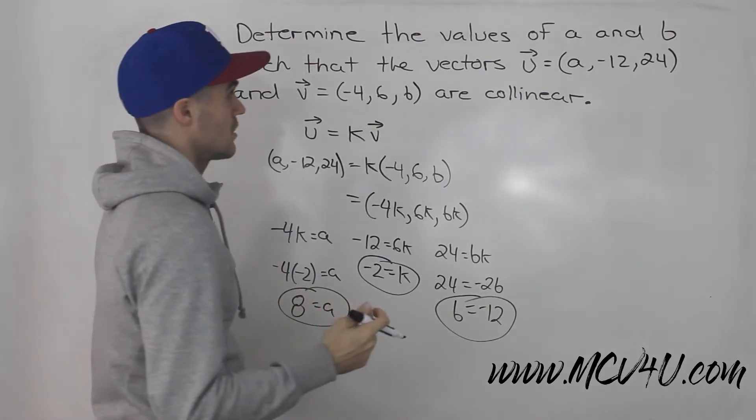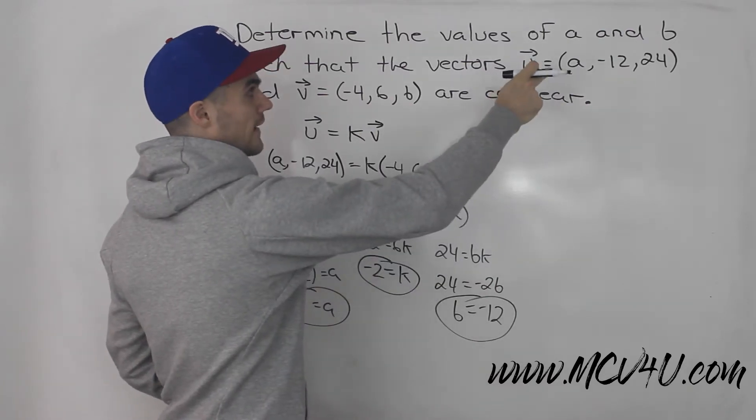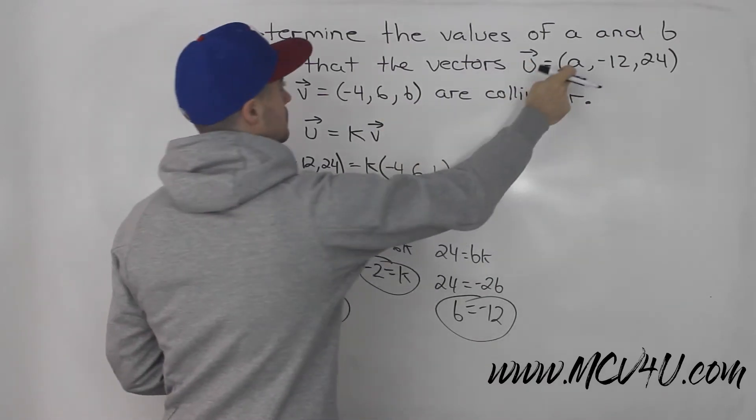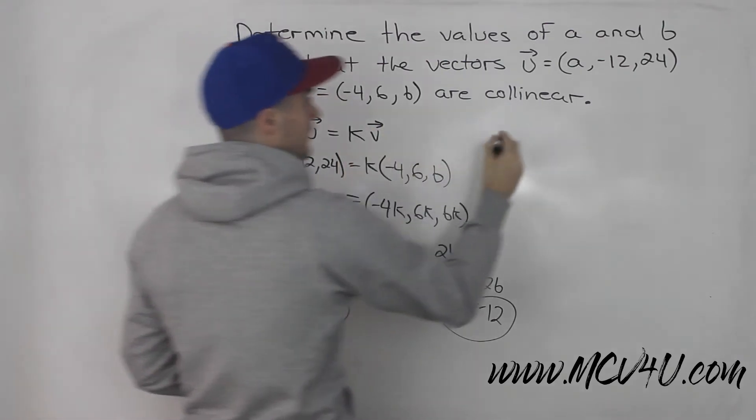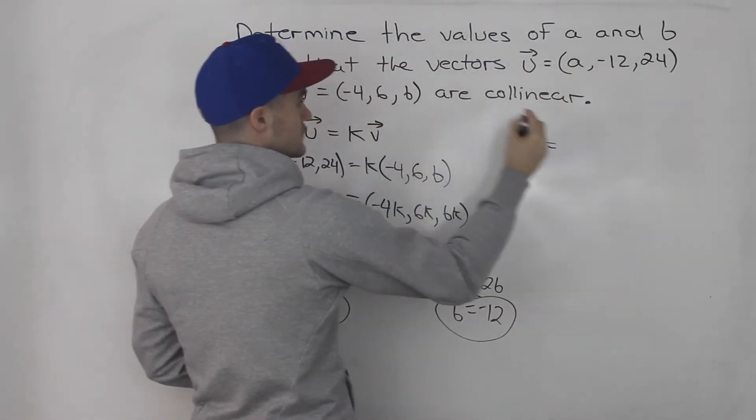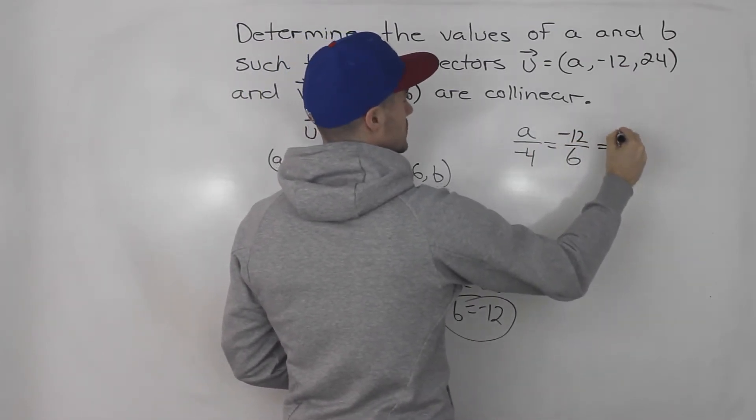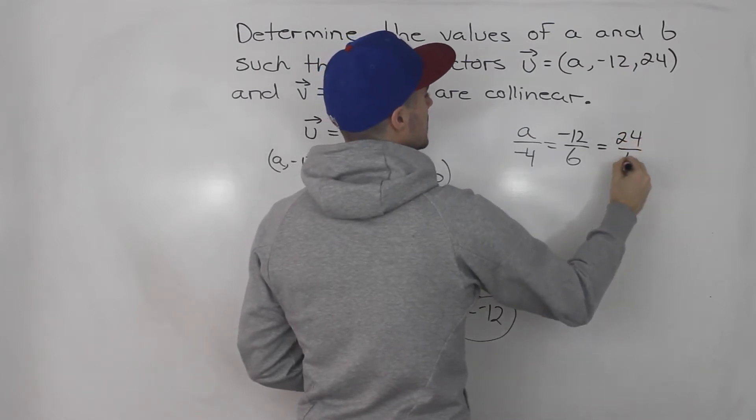Another way you can solve this is you can put all the X, Y, and Z values as ratios. So basically, A over -4 has to equal -12 over 6, which has to equal 24 over B.